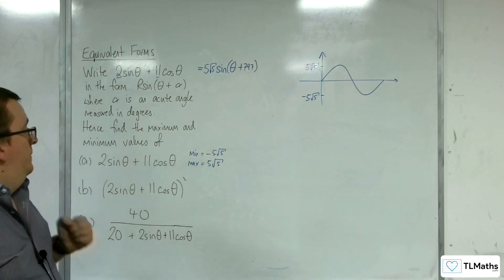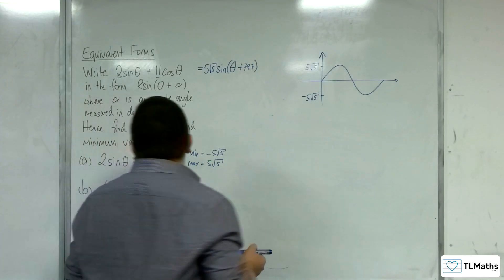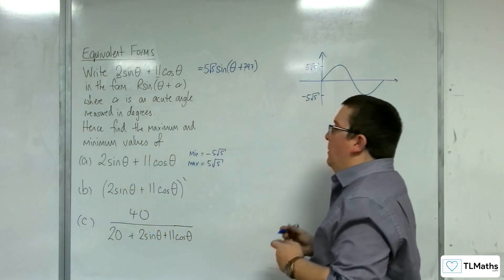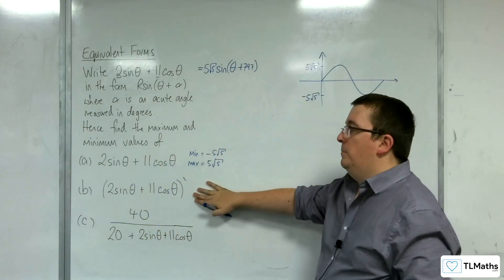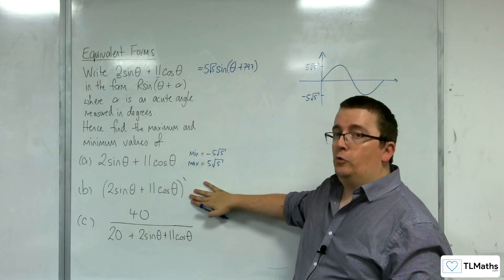Right, now, next question then. What's the maximum and minimum value of 2 sine theta plus 11 cosine theta all squared?